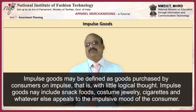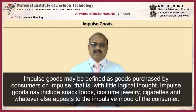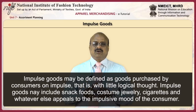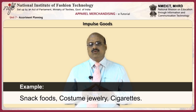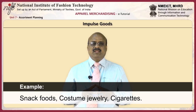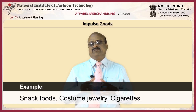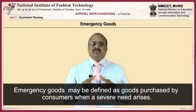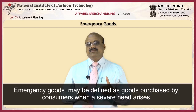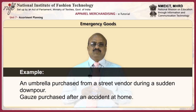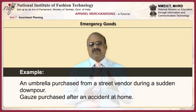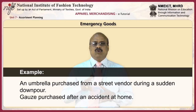Impulse goods may be defined as goods purchased by consumers on impulse — that is, with little logical thought. Impulse goods may include snack foods, costume jewelry, cigarettes, and whatever else appeals to the impulsive mood of the consumer. Emergency goods may be defined as goods purchased by consumers when a severe need arises — for example, a sudden downpour may cause you to purchase an umbrella, or a home accident may cause you to purchase gauze or adhesive tape from a local pharmacy.